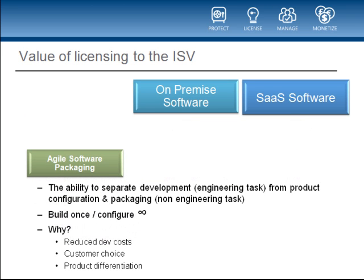The second benefit is what we call agile software packaging — that is, the ability to package the software for the market dynamically. Essentially, what you're doing here is decoupling the development of the software from the configuration and packaging of the specific offerings that are promoted and provisioned for the customer. Development is the job of engineering, whereas packaging the different editions of the software is the job of product management and marketing. Enabling this build-once, configure-many scenario can dramatically reduce the cost of development, both in terms of number of builds and average build time. By empowering product management for this task, you can adapt your business dynamically to the market to suit every customer and every pocket — facilitating choice, product differentiation and improved market penetration.